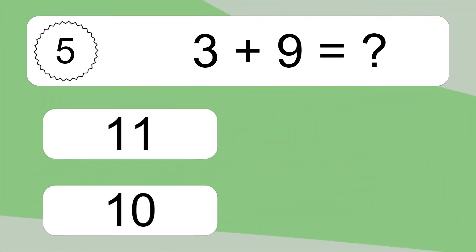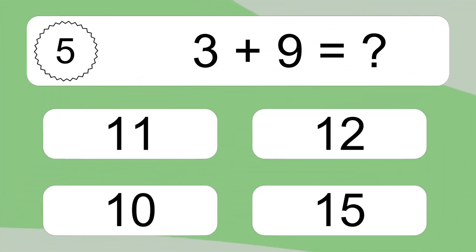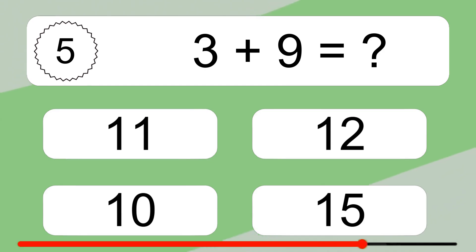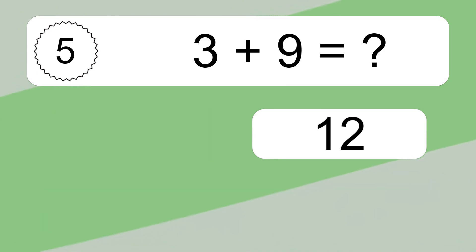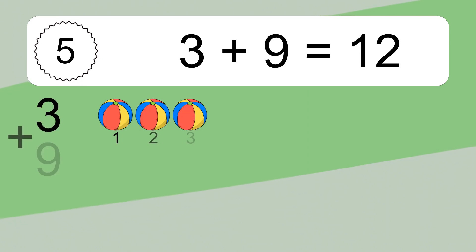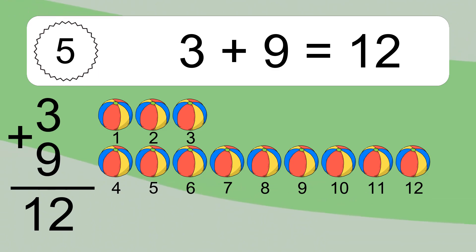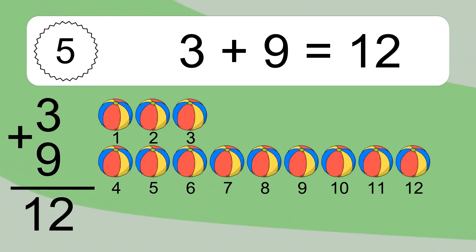3 plus 9 equals what? 3 plus 9 equals 12. Let's count it: 1, 2, 3, 4, 5, 6, 7, 8, 9, 10, 11, 12.